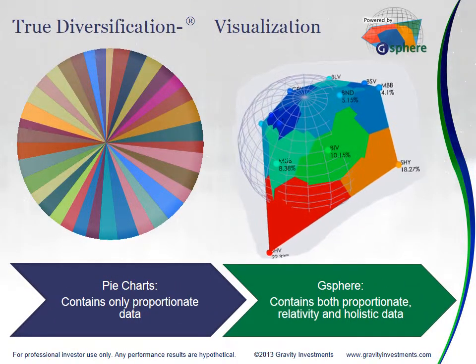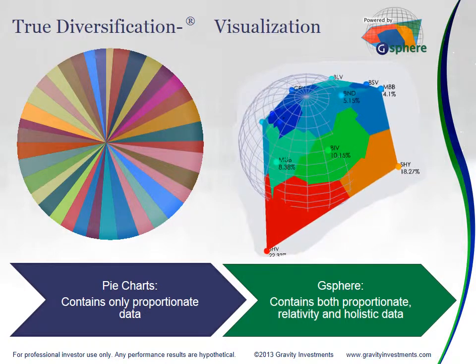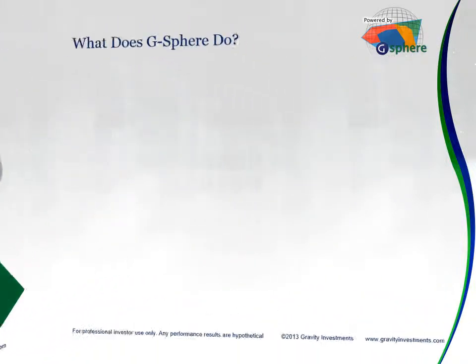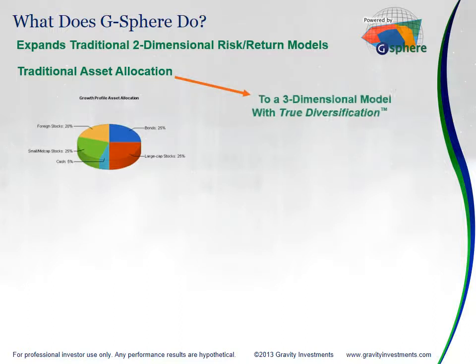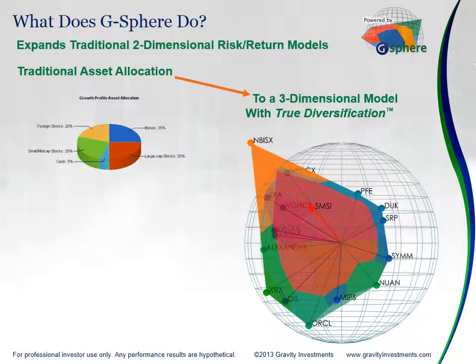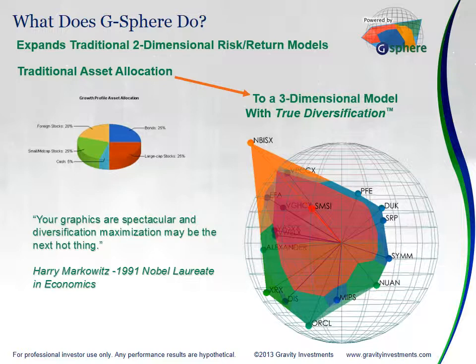Really what G-Sphere is doing is taking all this information that is typically just contained in a pie chart — this proportionate information. But by adding a dimension to that pie chart, from 2D to 3D, we're able to capture not just the proportionate data, but also the relativity and the holism. So by adding a dimension, we capture much, much more information. We've had some industry luminaries say some nice things about us.